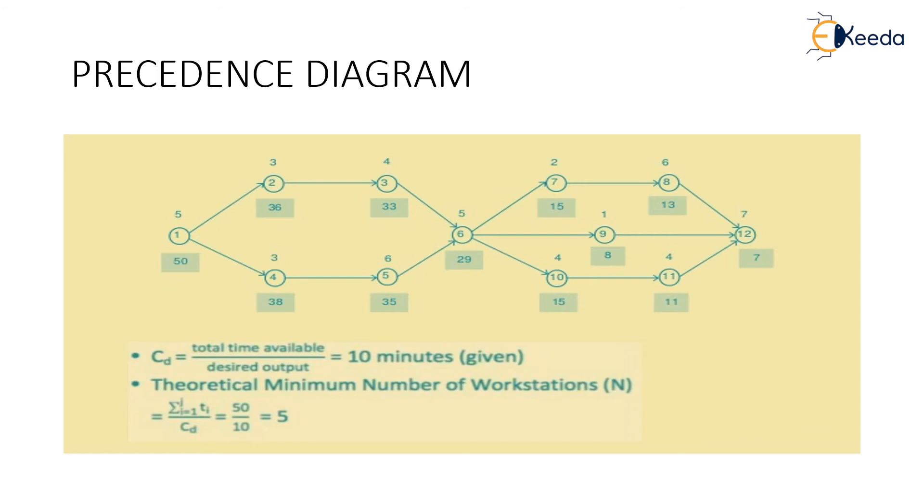Hence the total cycle time is equal to the total time available divided by the desired output which is equal to 10 minutes. Therefore the minimum number of workstations N is given as 50 divided by 10 which is 5. Hence the theoretical minimum number of workstations is 5.